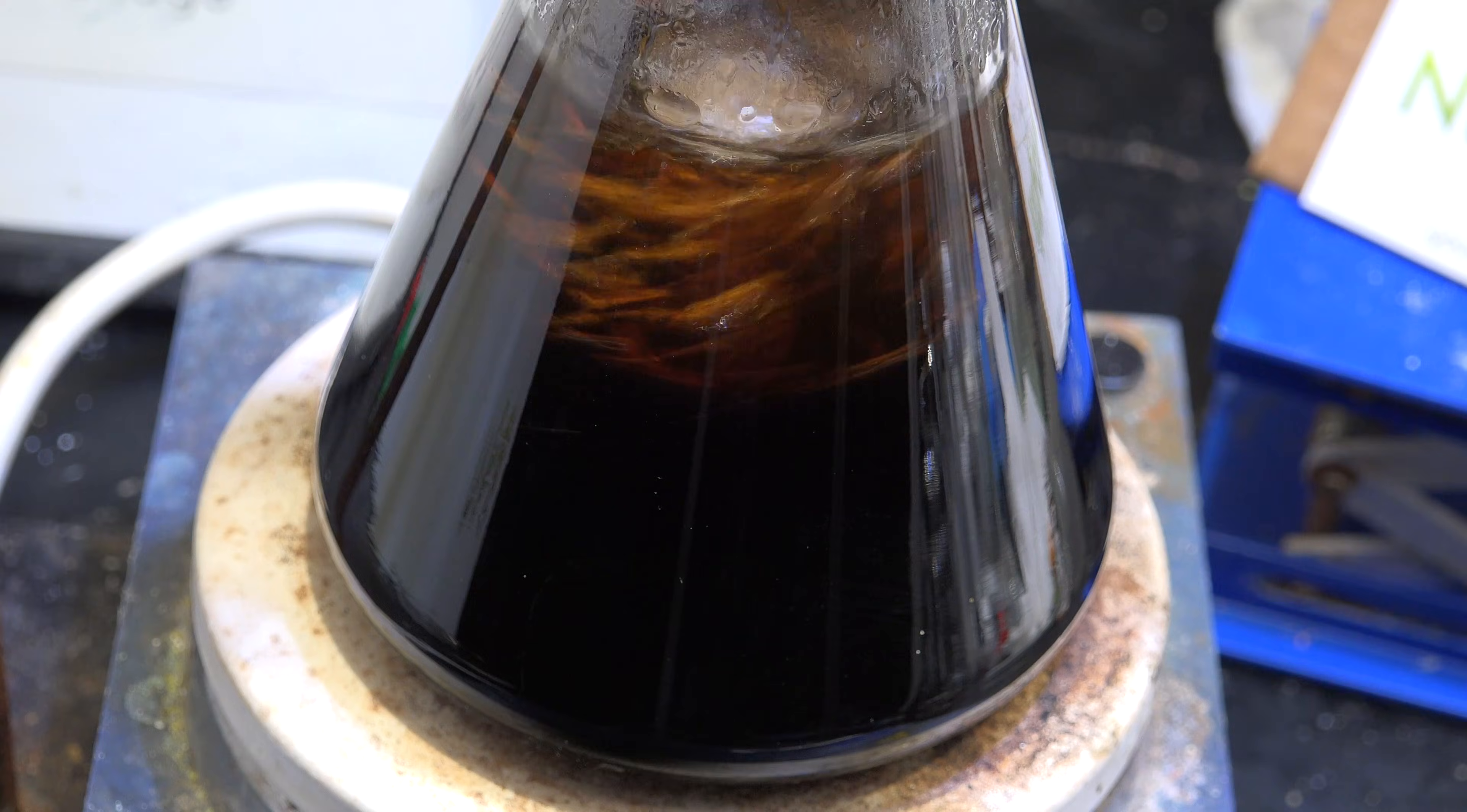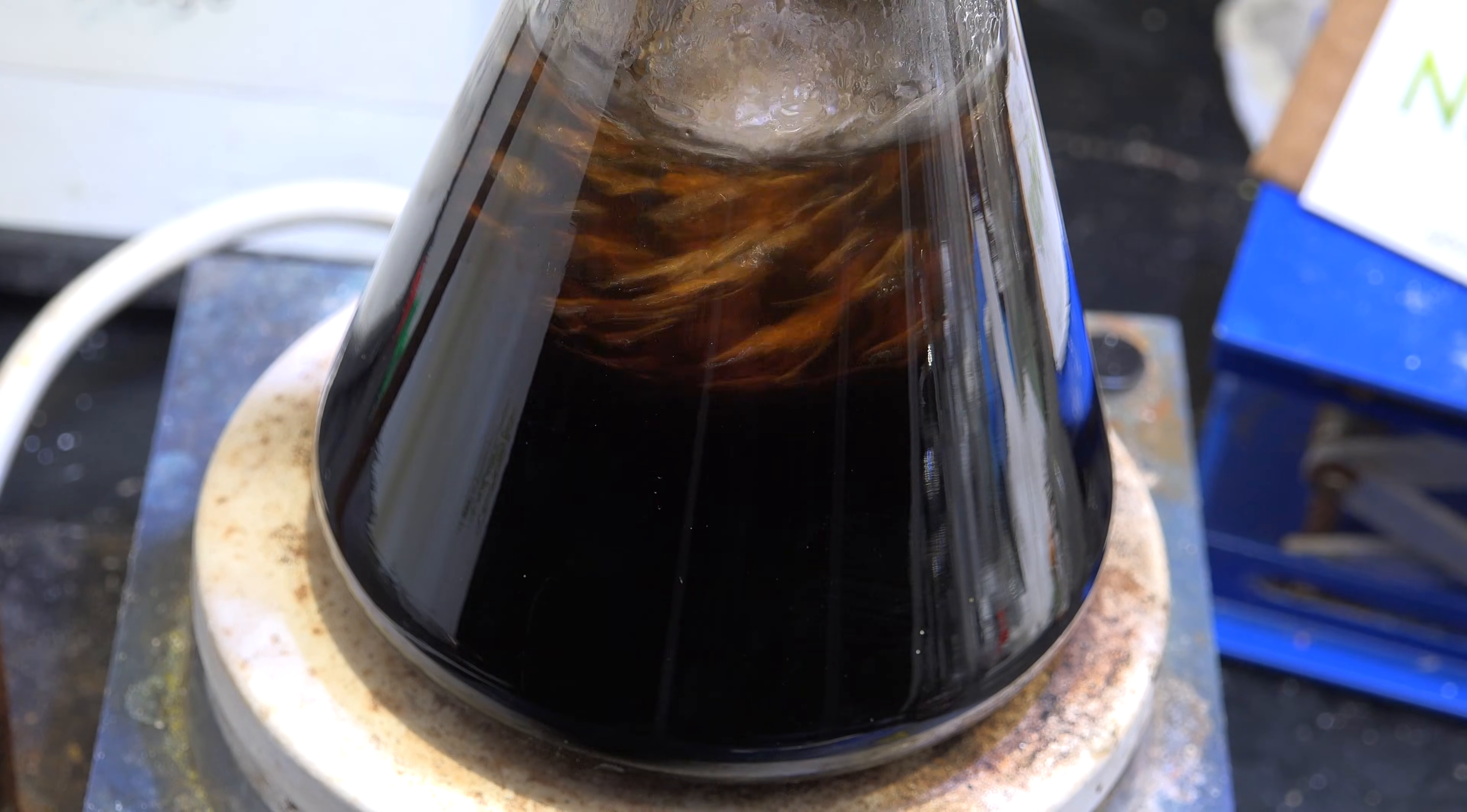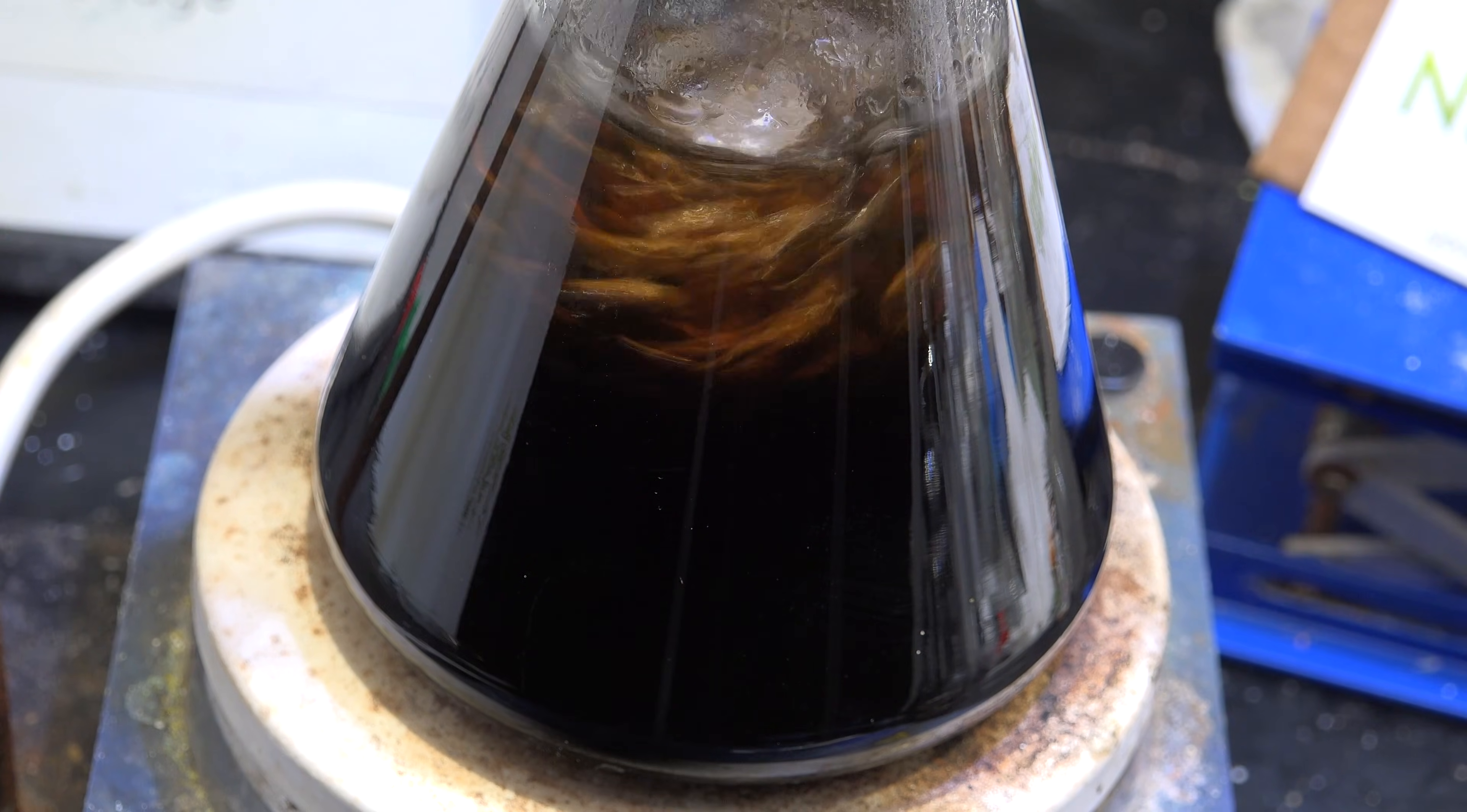Now you might be wondering why I'm refluxing and not distilling. Unlike bromoethane, bromohexane has a high boiling point, similar to that of hexanol. So we can't just distill it out or we'd lose our hexanol as well. It's therefore preferable to just reflux everything and let the reaction go to completion.